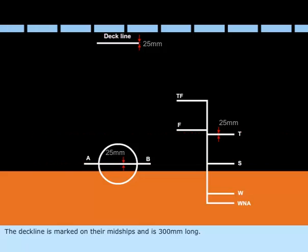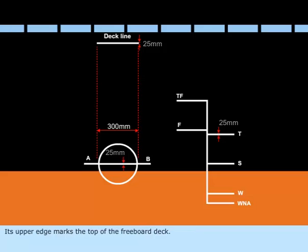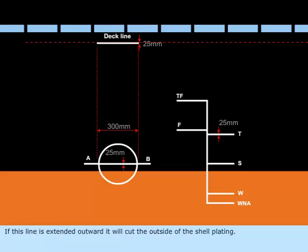The deck line is marked on their midships and is 300mm long. Its upper edge marks the top of the freeboard deck. If this line is extended outward, it will cut the outside of the shell plating.